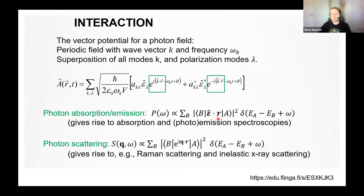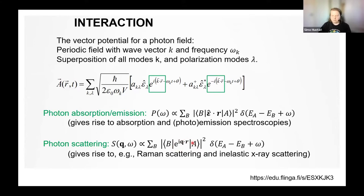In the dipole approximation, everything else drops out and what we are left with is the polarization vector interacting with the position vector of the electron. This gives the transition rate for absorption and emission spectroscopies. In scattering, something similar happens, but I'd like to retain that the transition matrix operator contains the k vector of the incoming minus the k vector of the outgoing beam — the scattering vector q — which can also induce non-dipolar excitations. This gives rise to Raman scattering or inelastic X-ray scattering.